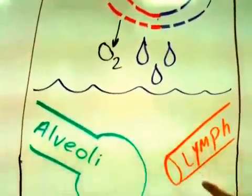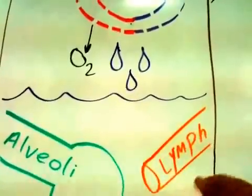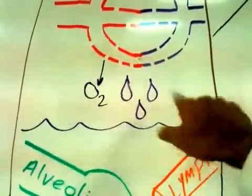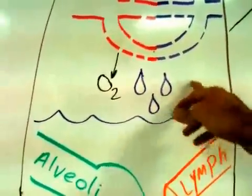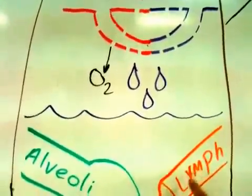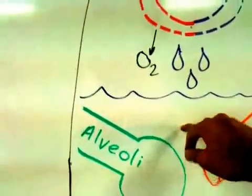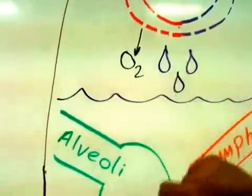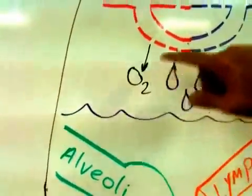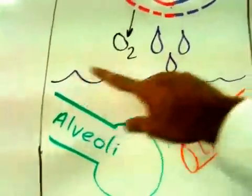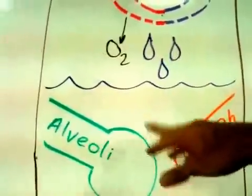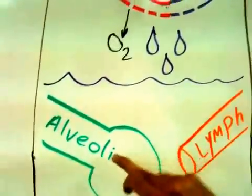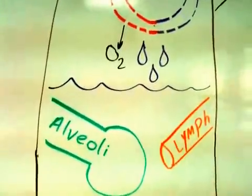At first the lymph can compensate for that, but you see that the lymph is responsible for gathering the plasma materials from the interstitium. Now, due to this attack of plasma, lymph cannot compensate for that. Therefore, interstitial fluid now is full of plasma and plasma proteins, and the distance between alveoli and microvasculature now is full of plasma.